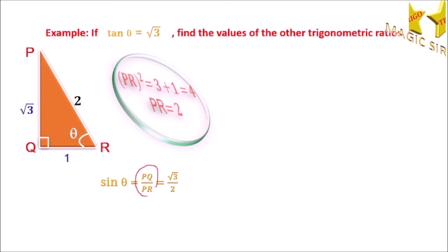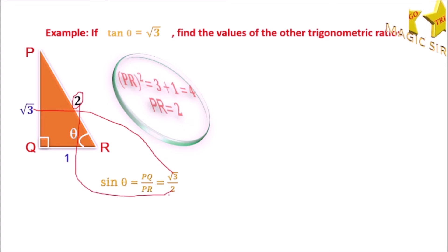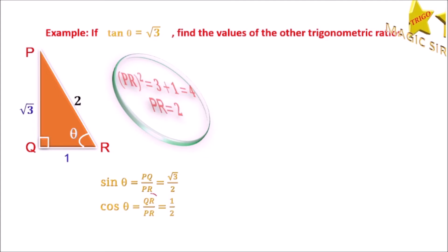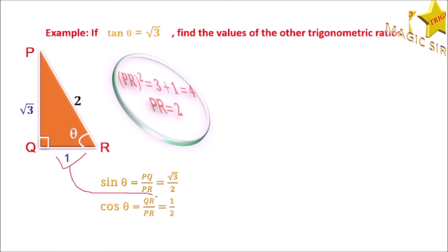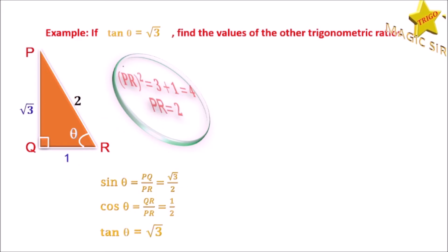Now by definition, sin theta is equal to PQ upon PR. We have PQ equal to root 3 and PR equal to 2, so sin theta is equal to root 3 by 2. Cos theta is equal to QR upon PR by definition. QR is equal to 1 and PR is equal to 2, so cos theta is equal to 1 upon 2. And tan theta equal to root 3, as given.